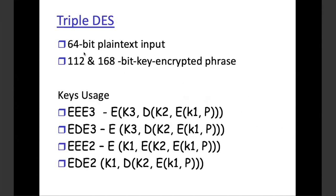Moving on to Triple DES. Again, 64-bit plain text input, but the key will be different. Because it's 'triple,' there are three times the encryption used for DES — the key usage is encrypt, encrypt, encrypt three times, so there are three keys being used.